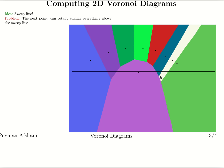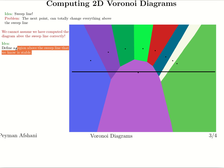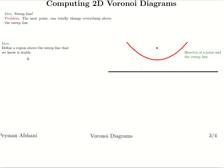To get over this problem, we add one more idea. We define a region above the sweep line that is stable — meaning whatever computation we do in that region is not going to be thrown away. To define a stable region, we have to look at the concept of a bisector of a point and the sweep line.